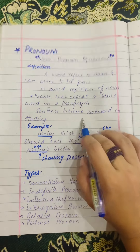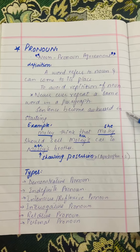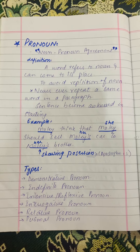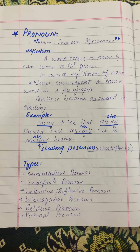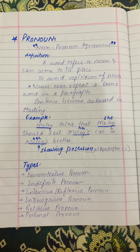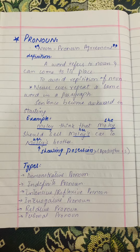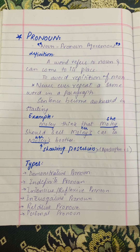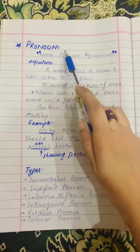Never ever repeat the same word in a paragraph — it becomes awkward. For example, if we are writing a paragraph on Quaid-e-Azam and again and again use the word 'Quaid-e-Azam': 'Quaid-e-Azam loved Pakistan, Quaid-e-Azam was the leader, Quaid-e-Azam was struggling hard for Pakistan, Quaid-e-Azam wanted to make Pakistan's people independent, Quaid-e-Azam was the first Governor-General.' This sounds very awkward because repeating the same word gives the paragraph an odd feeling. To avoid this type of awkwardness, pronouns are used.